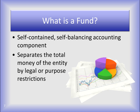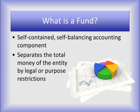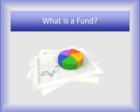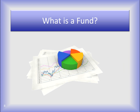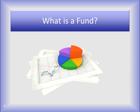There's the definition, but what does that mean? Let's take a closer look at our animated pie chart. This is a great illustration of funds. The pie represents our total cash balance, and the individual slices of pie represent separate funds. They operate independently of each other within the total cash balance.